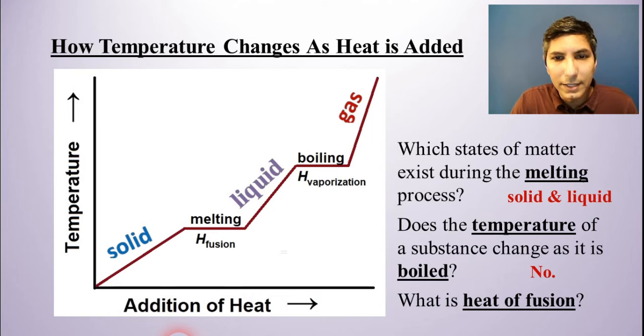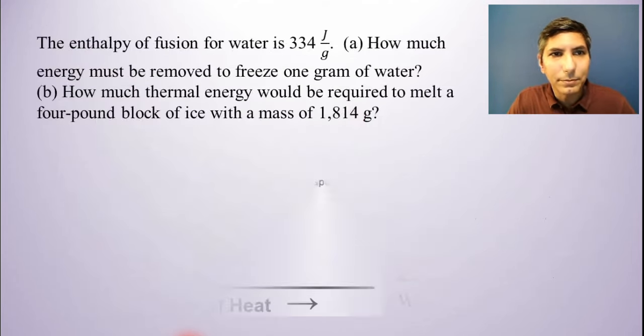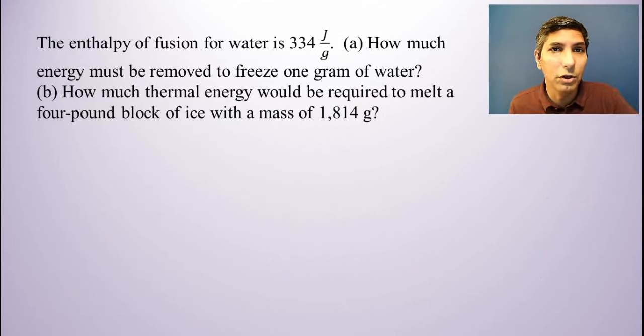And we'll focus in on heat of fusion for a couple of minutes. Now, let's imagine, in fact, this is actually correct, the heat of fusion or the enthalpy of fusion for water is 334 joules per gram. So part A says, how much energy must be removed to freeze one gram of water?